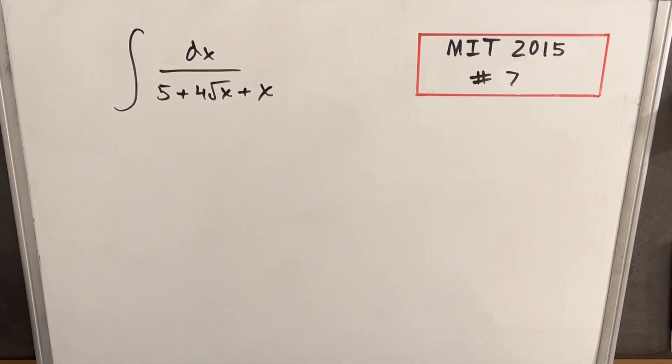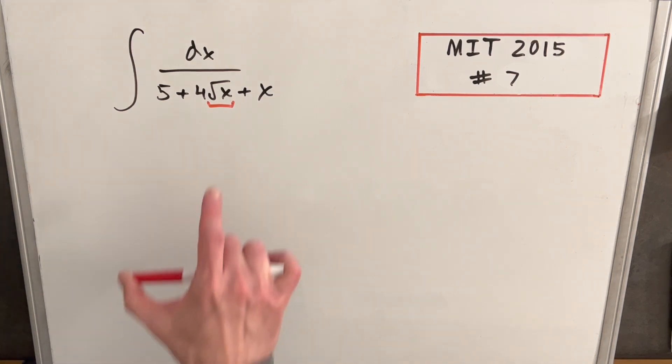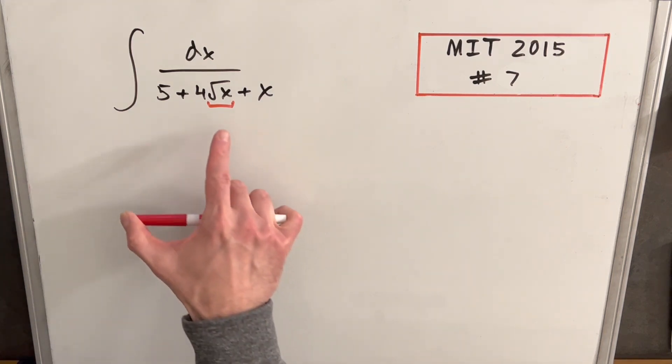Hey, I have here another integral from MIT Integration B 2015, problem number seven. We have integral of dx over five plus four square root of x plus x. Right away, first thing I need to deal with is this right here. We're not used to having